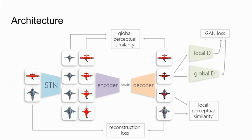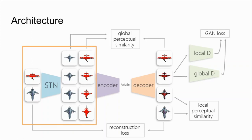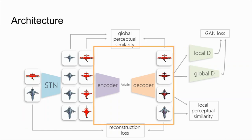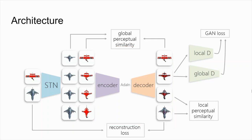The overall architecture of our system is shown here. The inputs are passed through the STN component to produce a series of partially warped versions. Each image passes through the encoder, at the end of which the adaptive instance normalization component blends in the statistics of the feature maps of corresponding pairs. The adjusted feature maps of each pair are concatenated and passed through the decoder to obtain the corresponding frames. The system is trained end-to-end, supported by the STN losses and the adversarial, reconstruction, and perceptual similarity losses.